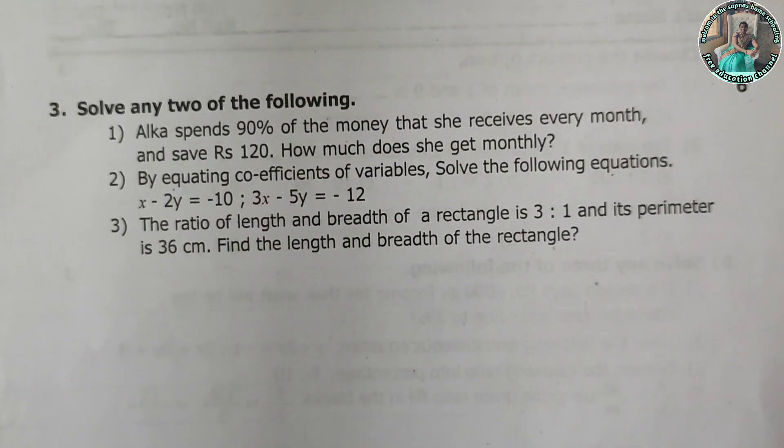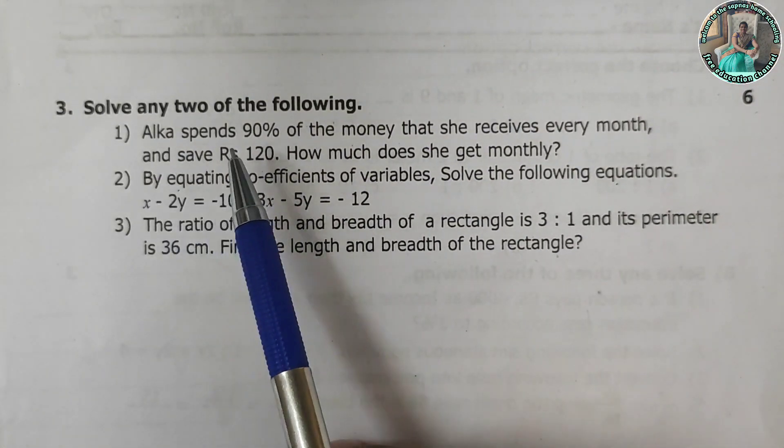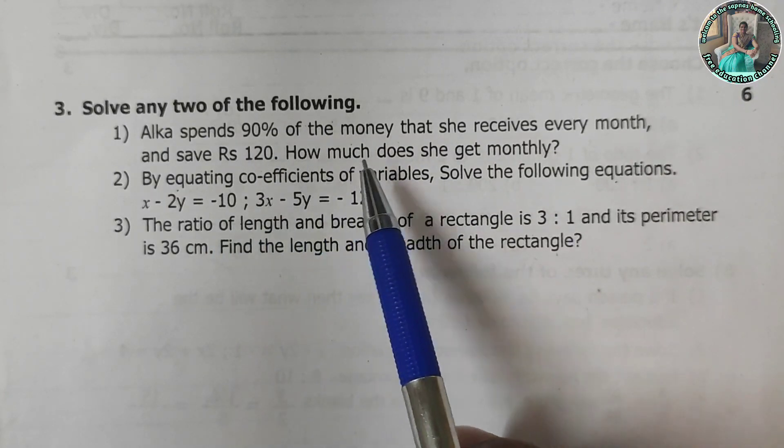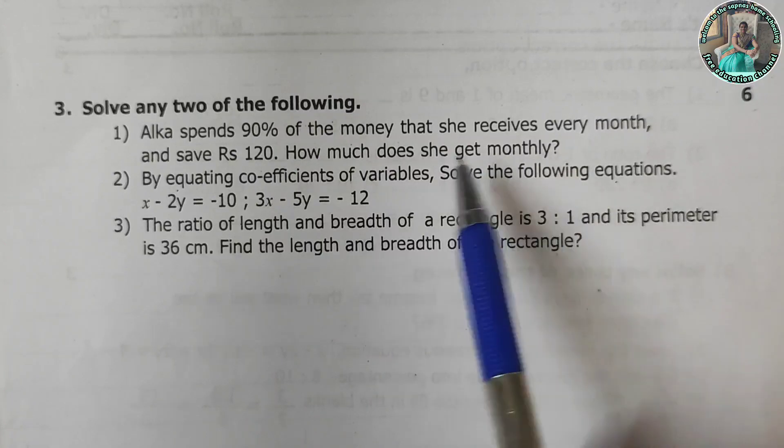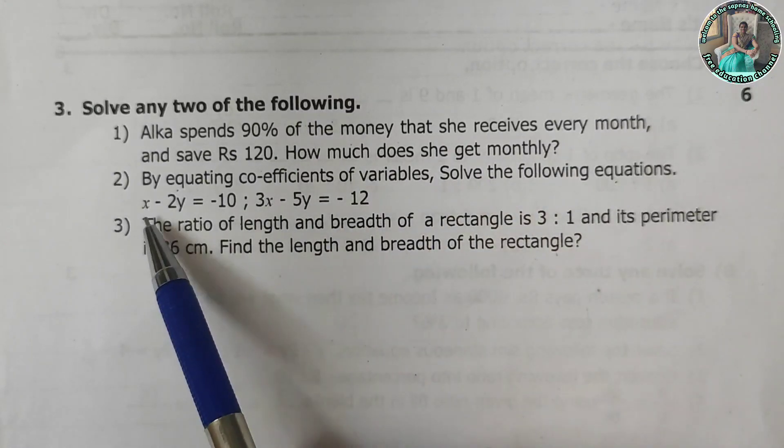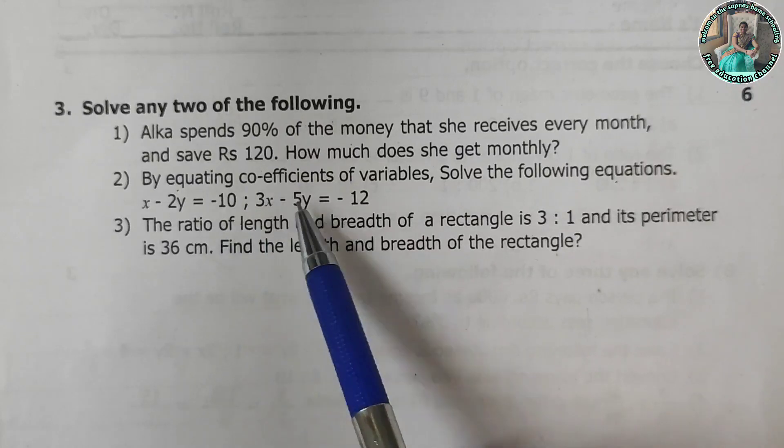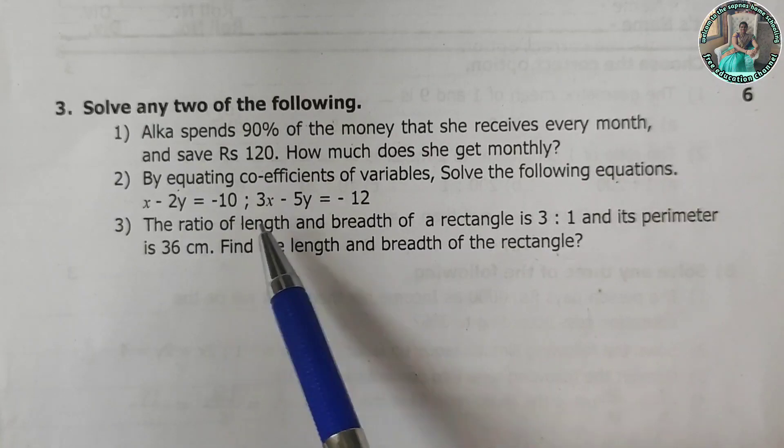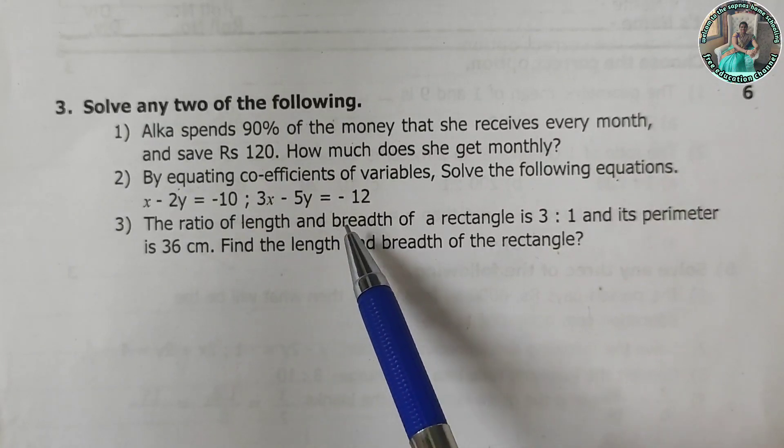Now we will turn to page 2. On the second page, third question, solve any two of the following. Alka spends 90% of money that she receives every month and saves rupees 120. How much does she get monthly? By equating coefficients of variables, solve the following equations: x minus 2y is equal to minus 10 and 3x minus 5y is equal to minus 12.